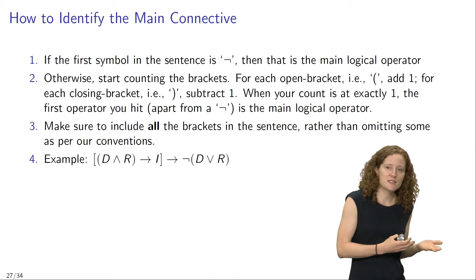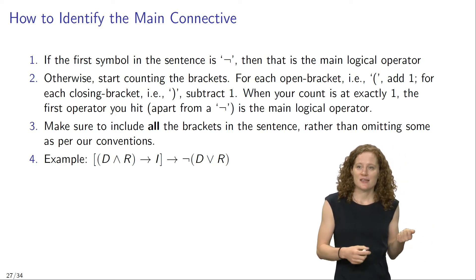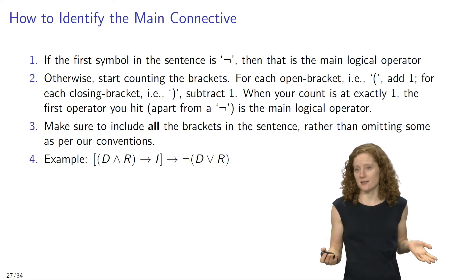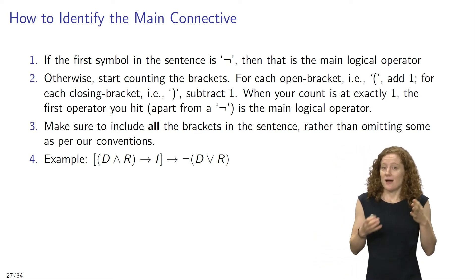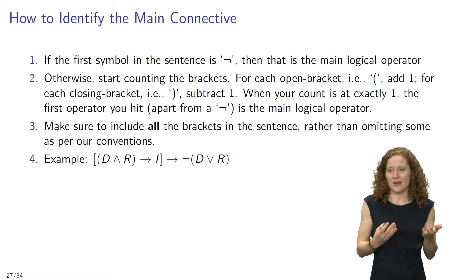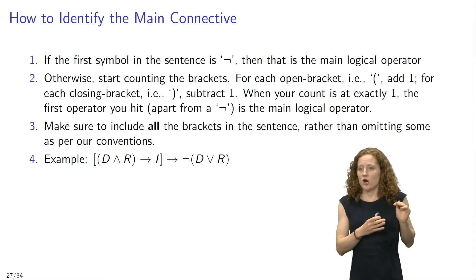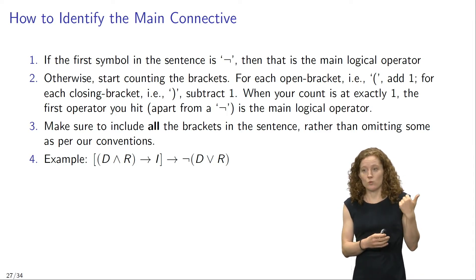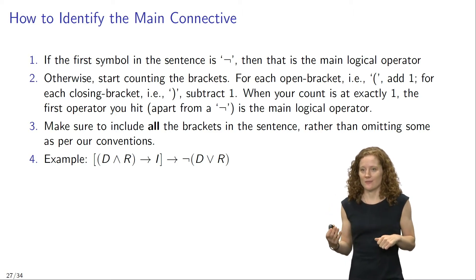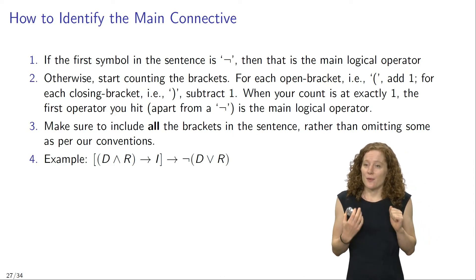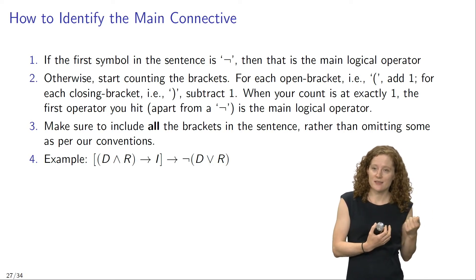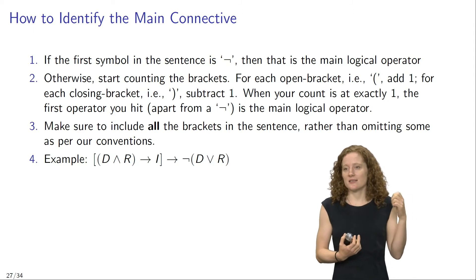First, if the first symbol in the sentence is a negation sign, then this negation sign is the main logical operator, or in other words, the main connective. Otherwise, if the first symbol is not the negation sign, start counting the brackets. For each opening bracket, add 1, and for each closing bracket, subtract 1. At the point when your count is at exactly 1, the first operator you hit which is not a negation sign is the main logical operator.